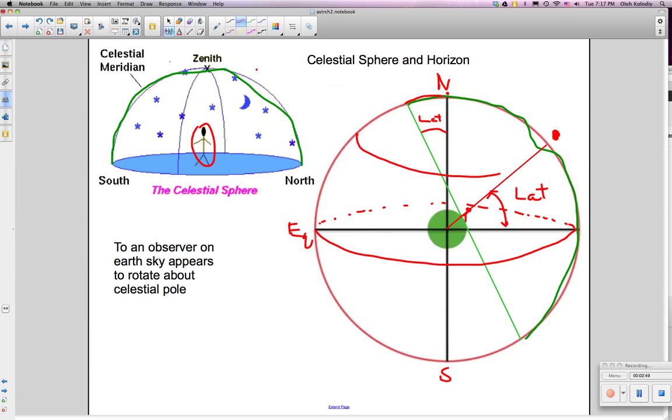So it will move around during the course of a night. It won't be at your zenith very long. Different stars will come around this way and appear at the zenith, and this star will actually move around in this way.